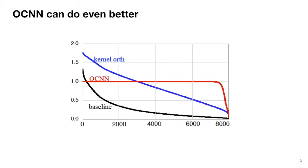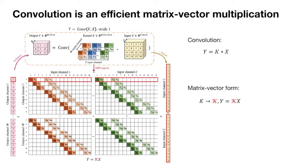We propose OCN as an improvement. In general, a convolution is an efficient matrix vector multiplication.